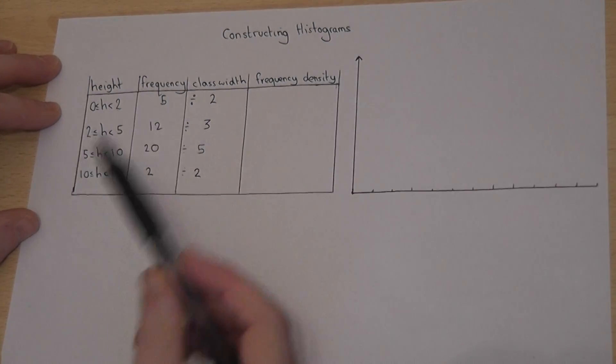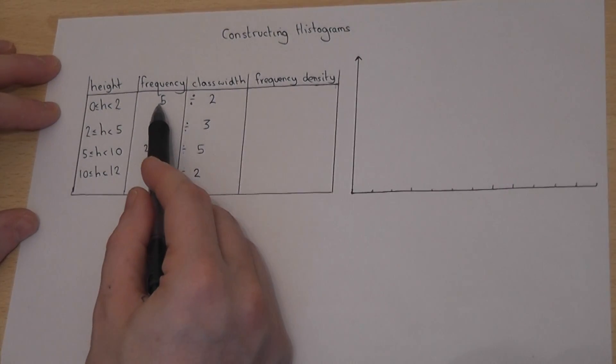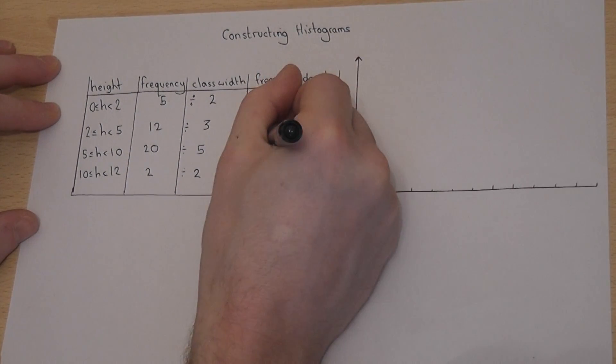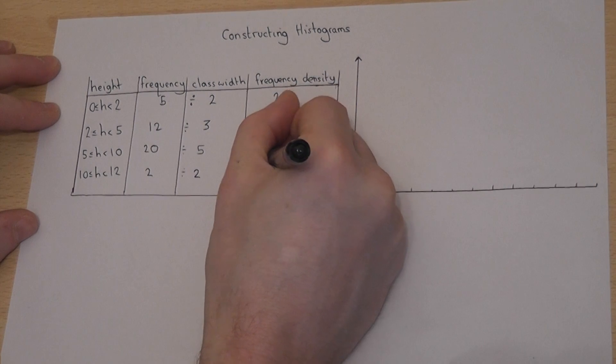There's four simple calculations to work out. So 5 divided by 2 is 2.5, then 4, another 4, and then 1.